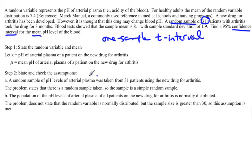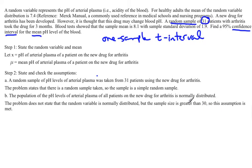The second assumption is that we have a normally distributed population — specifically, the pH level of arterial plasma of patients on the new drug for arthritis is normally distributed. The problem doesn't say anything about that, and we don't have the raw data to perform assessments of normality. However, our sample size is over 30, so the central limit theorem comes into play and we're okay. Normally, you should have the actual data in front of you and be able to do assessments of normality.